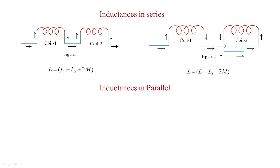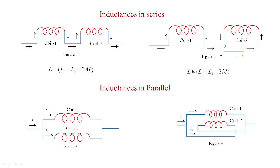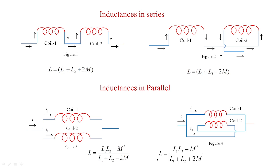If the same inductors are placed in parallel — shown in figures 3 and 4, known as cumulative and differential arrangements — the formula for equivalent inductance is L = (L1·L2 − M²) / (L1 + L2 − 2M) for cumulative, and (L1·L2 − M²) / (L1 + L2 + 2M) for differential. These are the derivations from our past classes on series and parallel inductance.